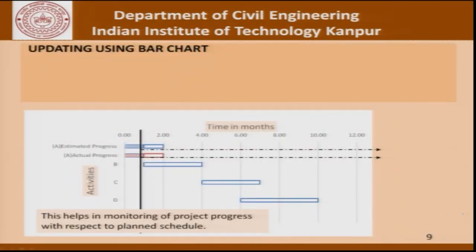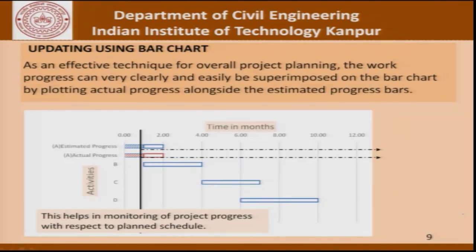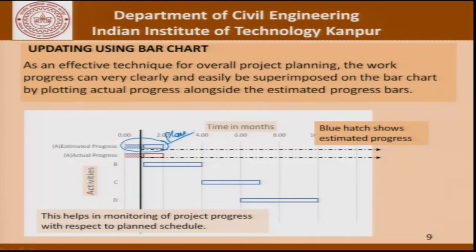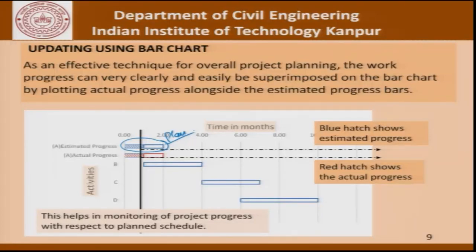To show what we are trying to say — how to use a bar chart for updating — the blue hatch shows the estimated progress, which is our plan. Compared to that, the red hatch shows the actual progress. This is a very effective technique for overall project planning. The work progress can be very easily and clearly superimposed on the bar chart by plotting actual progress alongside the estimated progress bars. This is a graphical and easy-to-understand method, as we will see in illustrative examples.